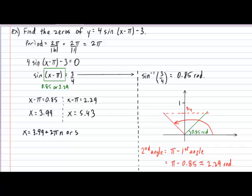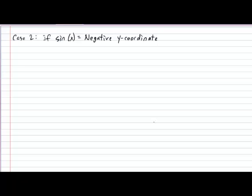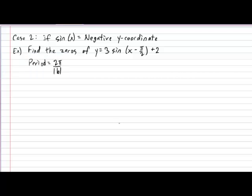On the other side, what value of x will cause the angle to be 2.29 radians? Isolating x will give us a value of 5.43. This finally allows us to conclude that our zeros will occur at 3.99 and then every 2 pi radians after that, or they will occur at 5.43 and then every 2 pi radians after that. Next, we must consider case 2 of finding the zeros of a sine function in which we cannot use the trig circle. Case 2 occurs when we find out that the sine of the angle yields us a negative y coordinate.